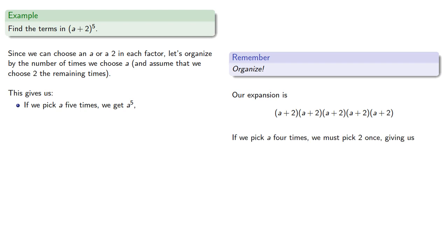If we pick a four times, we must pick 2 once. We can pick a four times in 5 choose 4, five ways, so there are 5 such terms, giving us 10a⁴.